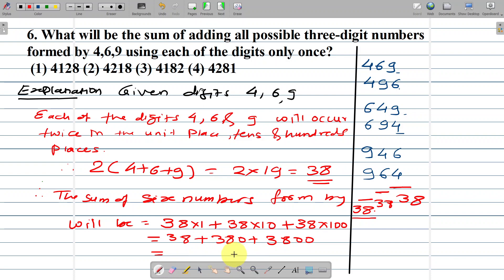Adding these: 8 + 0 = 8, 3 + 8 = 11 (carry 1), 3 + 1 = 4, then 4 + 8 = 12, giving us 4218. So the answer is option number two.